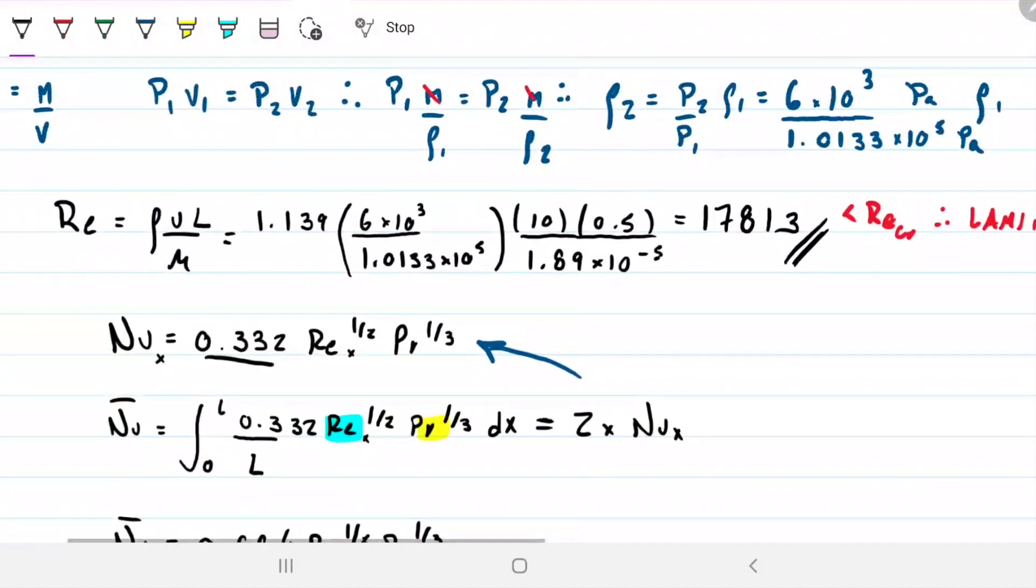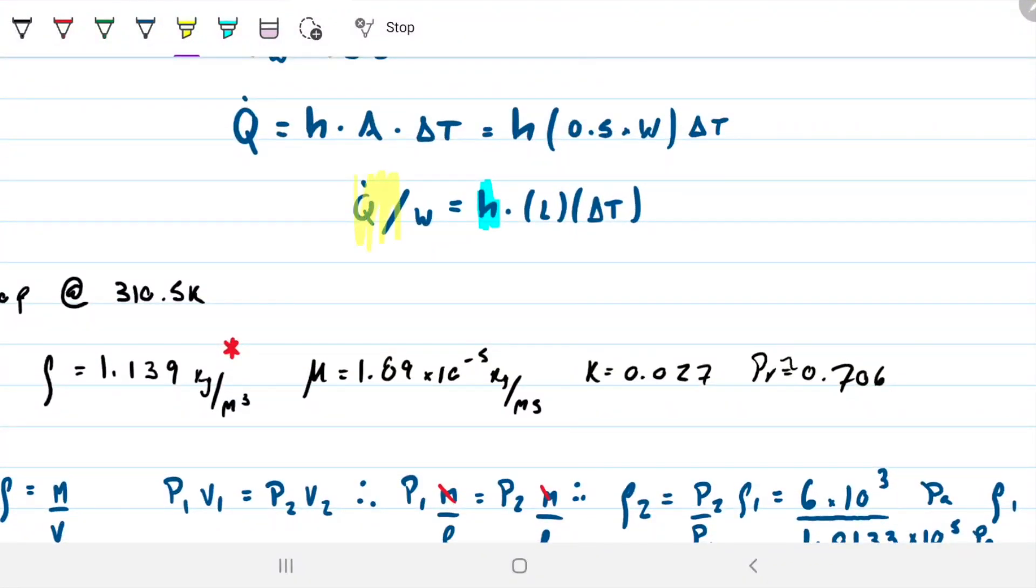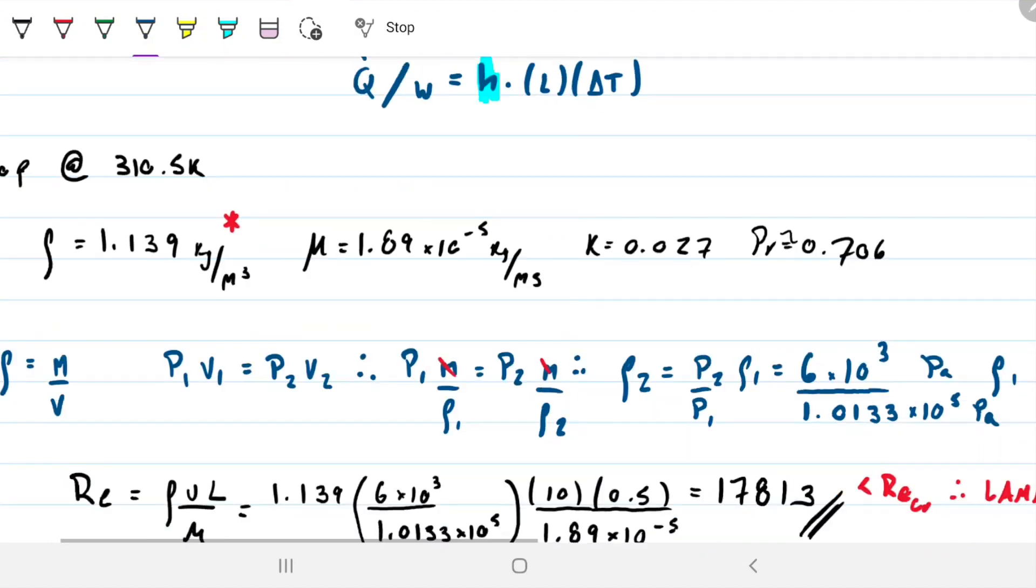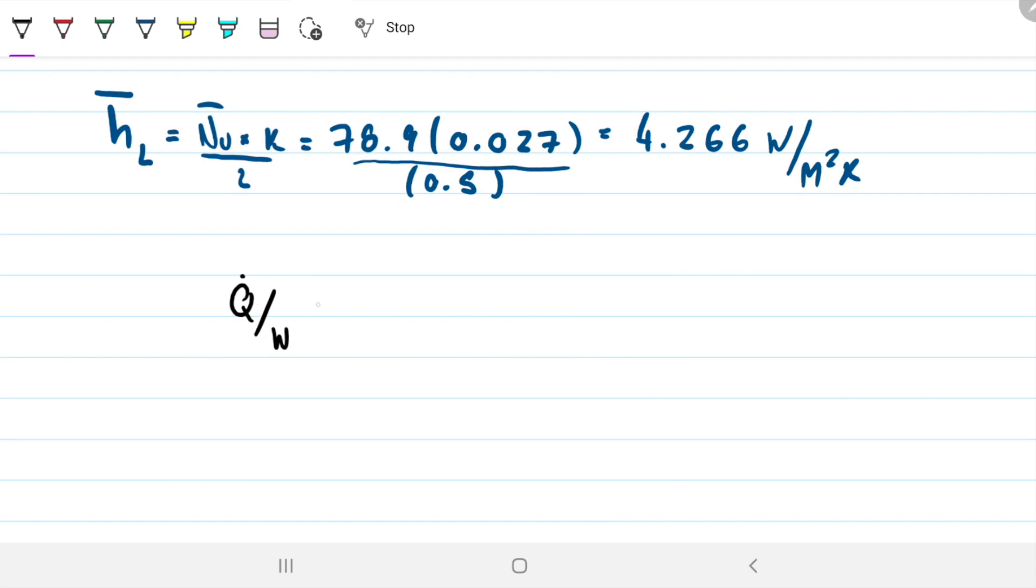We can finish it off. We were looking for this relationship here. To get that, we just needed our h for the whole thing. So if we want Q over width, just multiply our h, so we've got 4.266 times 0.5, and our difference in temperature is 45 minus 30, which will be 15. Unit wise, that'll be watts per meter squared Kelvin, multiply by meters, multiply by Kelvin. So Q over width will be about 32 watts per meter. That'll be our answer right there.